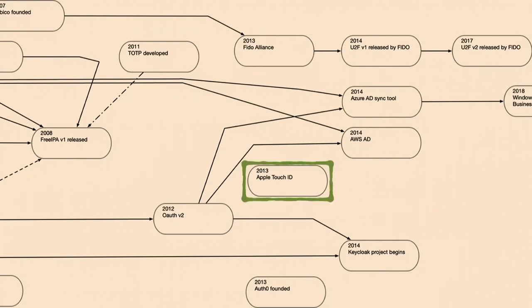2013 was also really interesting — Touch ID was released by Apple. This is probably the first time where we see biometric auth released at scale and done arguably correctly. What Apple does is store a map of your fingerprint in a secure enclave as a coprocessor. When you go to authenticate, the device requests the secure enclave to do authentication, you provide your fingerprint, the secure enclave does a match, and it releases cryptographic material. It never actually releases the fingerprint anywhere else. This is really important — it means security coprocessors are now coming into devices.